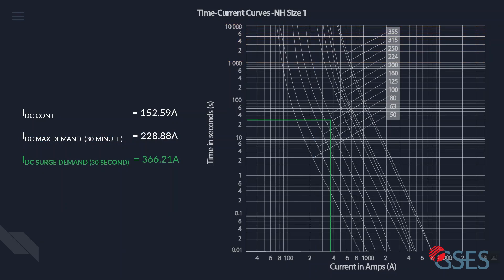Lastly, find the intersection of surge demand current, 366 amps, and the surge time, 30 seconds.